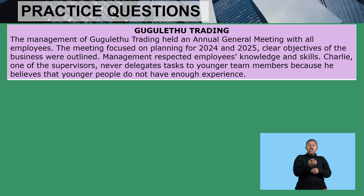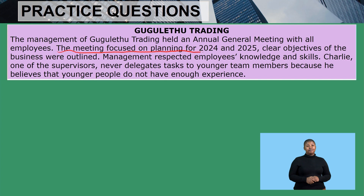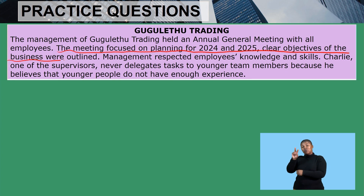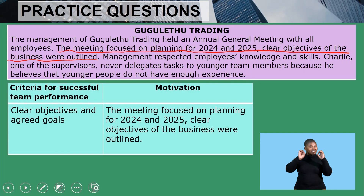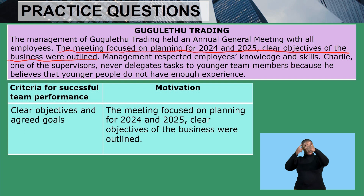Clear objectives of the business were outlined. This sentence — 'the meeting focused on planning for 2024 and 2025, clear objectives of the business were outlined' — tells us about clear objectives and agreed goals. You need to take the sentence from the beginning up until the end so that it does not lose its meaning. So the correct answer for the first criterion is: clear objectives and agreed goals. Quote the full sentence. We need to identify two criteria.